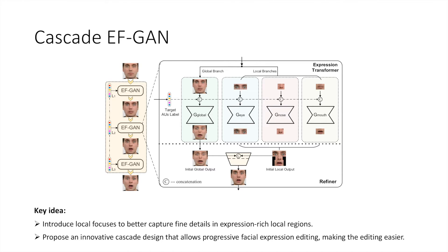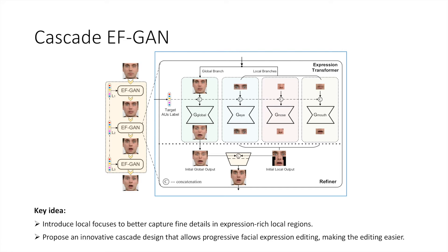Let's see more details about our method. The Cascade EFGAN consists of multiple EFGANs in cascade that perform expression editing in a progressive manner. Each EFGAN shares the same architecture, which consists of an expression transformer and a refiner. Unlike other methods that employ only one global branch to process the facial image, our expression transformer incorporates three additional local branches with predefined local focuses around eyes, nose, and mouth to better capture the fine details. The expression transformer takes a facial image and target expression labels as input and generates the initial editing. Then the refiner fuses the outputs of different branches of the expression transformer and generates the final editing of one EFGAN.